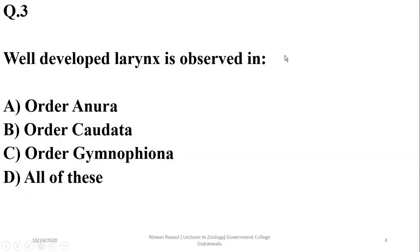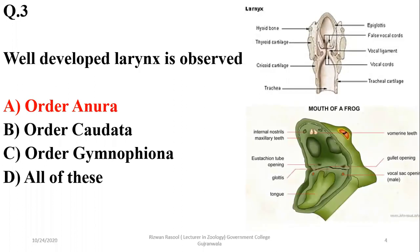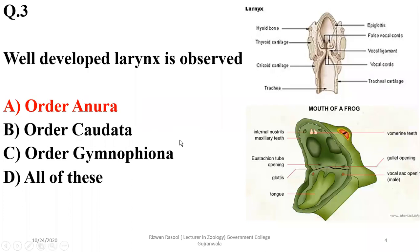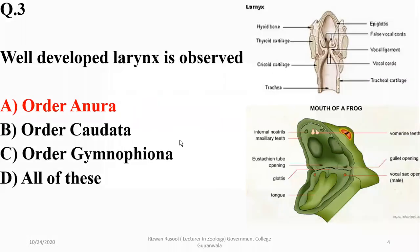Question number three: well-developed larynx is observed in which order? A well-developed larynx for the production of sound in communication is observed in frogs and toads, as they have well-developed vocal cords, epiglottis, glottis, and other structures involved in sound production. So the right option is A — in anurans they have a larynx or voice-producing apparatus.